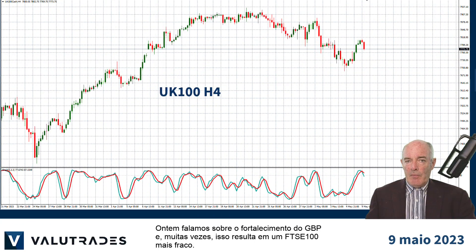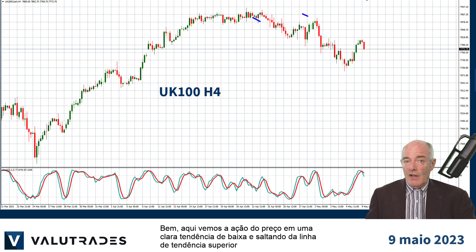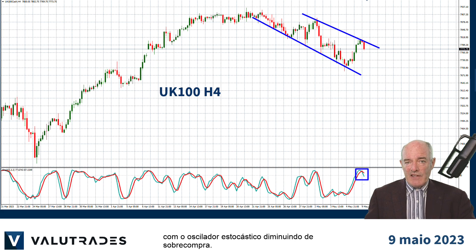Yesterday we talked about the pound getting stronger and very often this results in a weaker FTSE 100. Here we see price action in a clear downtrend and bouncing off the upper trend line with the Stochastic Oscillator turning down from overbought.